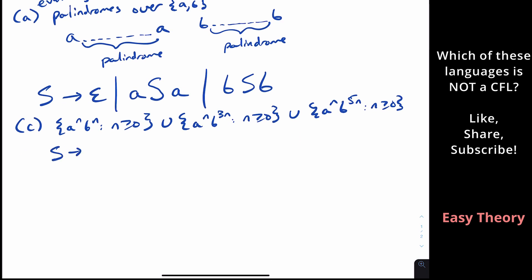Well, the first grammar, we can just do S goes to A, S, B, or empty. The second grammar, I'll just call that S1 so that we can differentiate them. Then for the second one is S2. And what does that make? Well, it's very similar. But instead of having one B, we're going to generate three. So with every A, we're going to generate three Bs, or empty. And similarly, for the third one, that'd be A, S3, then five Bs, or empty.